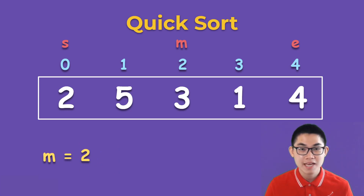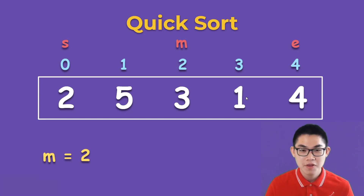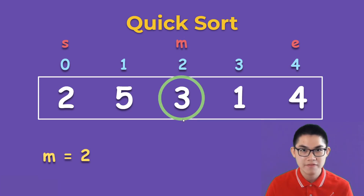The fourth step is to select our pivot, and that's very easy to do. So wherever our mid-index is, we look at the number in the array, and this will be our pivot.